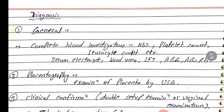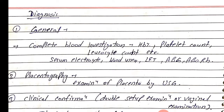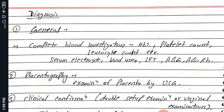Diagnosis: complete blood investigation is done — including HB percentage, platelet count, leukocyte count, and other blood investigations. Because of the coagulation defect, serum electrolytes, serum blood urea, liver function test, and ABG are also assessed. Placentography — ultrasound examination of the placenta — is performed to confirm the diagnosis.